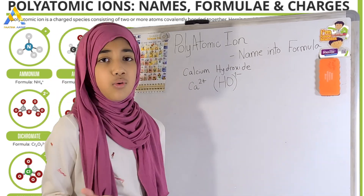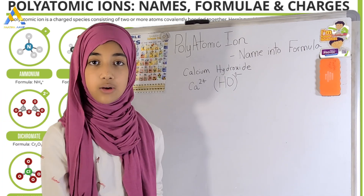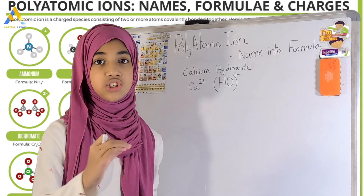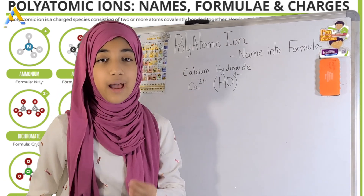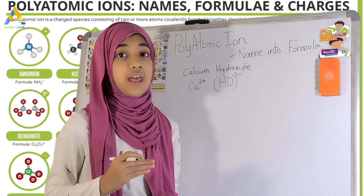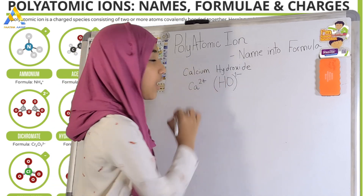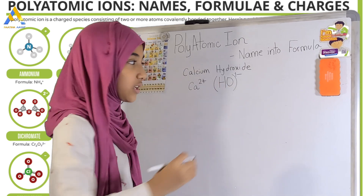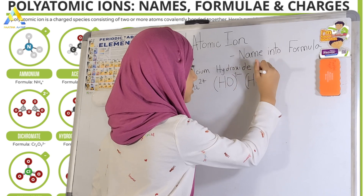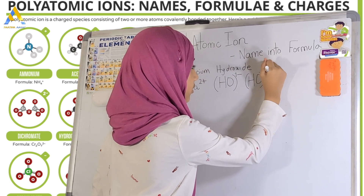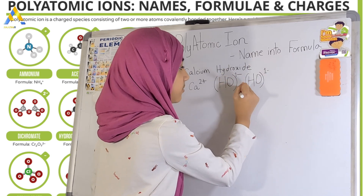That means that hydroxide always carries a negative charge. Now what we want to do is equally cancel out the charges so that we can write the formula. Well, we can't cancel out 2-plus and 1-minus — we have to do 2-plus and 2-minus. It only has 1-minus, so we need 2 atoms of hydroxide. This would be 2-minus, or just 2 atoms of this.